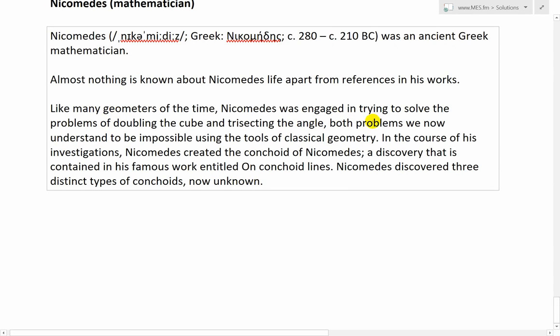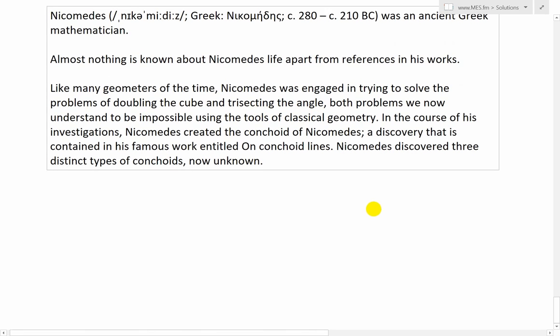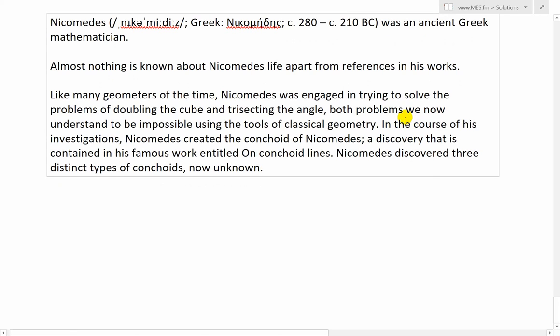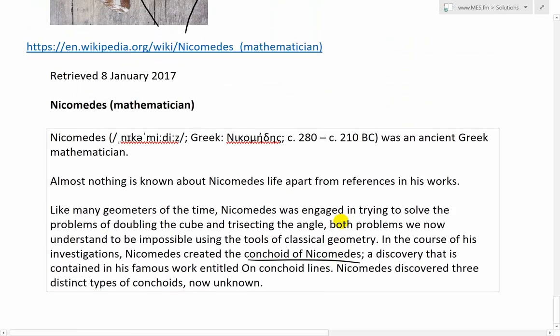So he was roughly living around 280 to 210 BC. He was an ancient Greek mathematician. Almost nothing is known about Nicomedes' life apart from references in his works. Like many geometers, Nicomedes was engaged in trying to solve the problems of doubling the cube and trisecting the angle, all these are interesting stuff. Hopefully I'll get into those in later videos. Both problems we now understand to be impossible using the tools of classical geometry. In the course of his investigations, Nicomedes created the Conchoid of Nicomedes, a discovery that is contained in his famous work entitled On Conchoid Lines. Nicomedes discovered three distinct types of conchoids, now unknown.